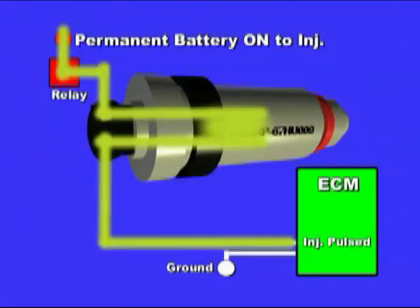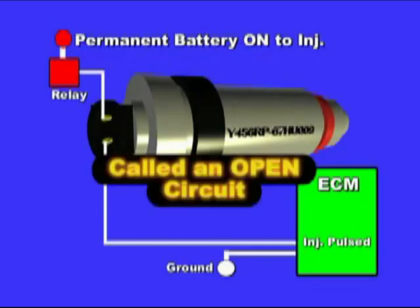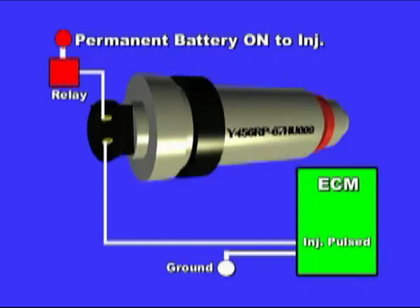If you get an OBD2 injector open code P0200 to P0212, do as follows. The ECM always monitors the injector wire. 12 volts flow from the battery, to the relay, and through the injector. It then returns through the injector coil to the ECM wire. If 12 volts is not present at the ECM wire, then it knows that either the connector is disconnected, the wire is broken, or the injector coil is also broken. Either way, this is called an open circuit, which is why the ECM issues an OBD2 open circuit code. Injector open means that the return voltage is missing from the ECM wire.